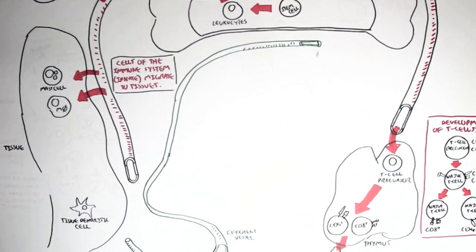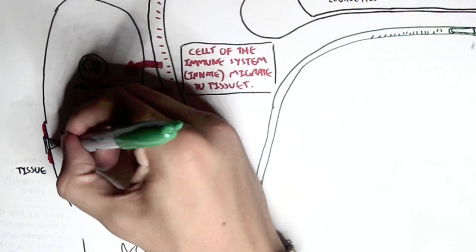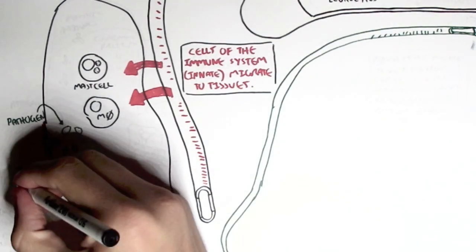So what happens during an invasion of a pathogen in a tissue? So what happens, for example, if a nail or some object penetrates the skin or tissue somewhere, and it brings in pathogens?